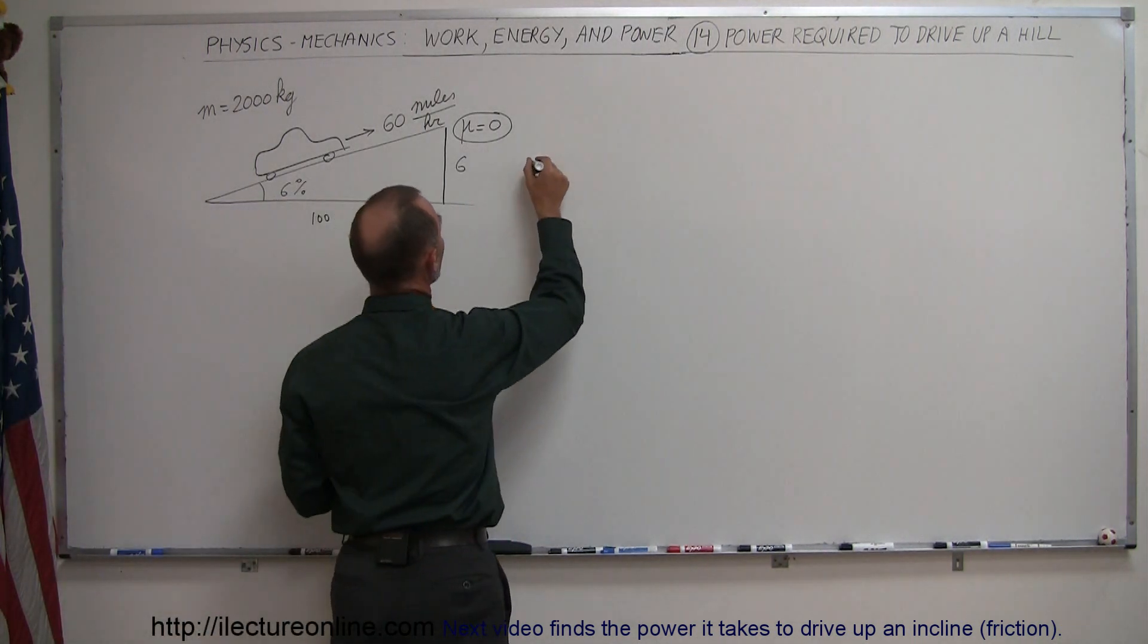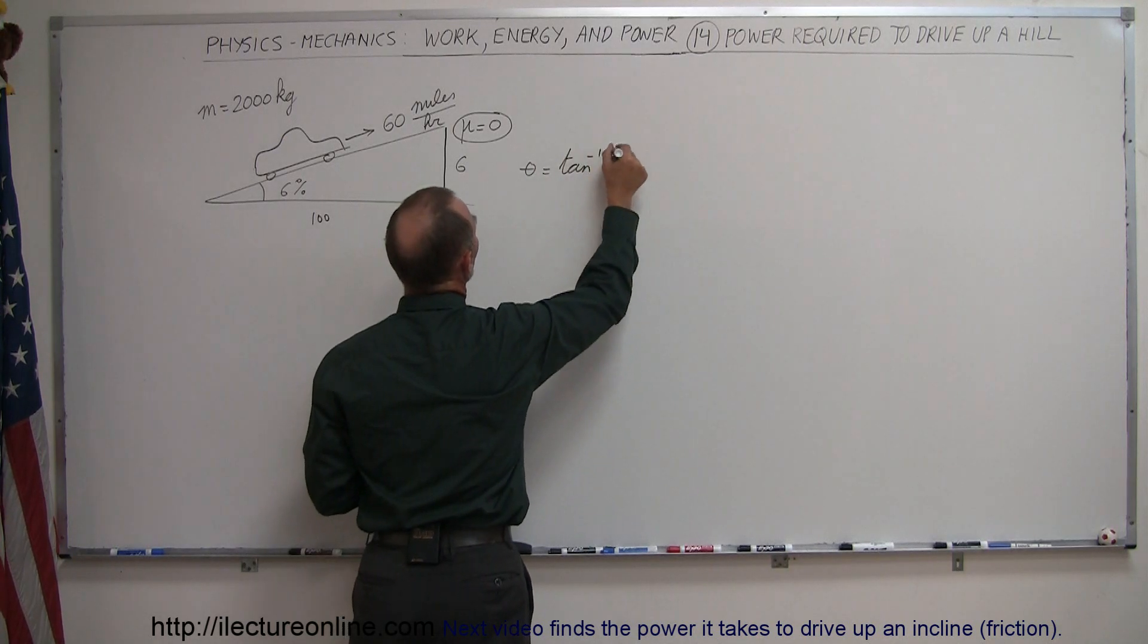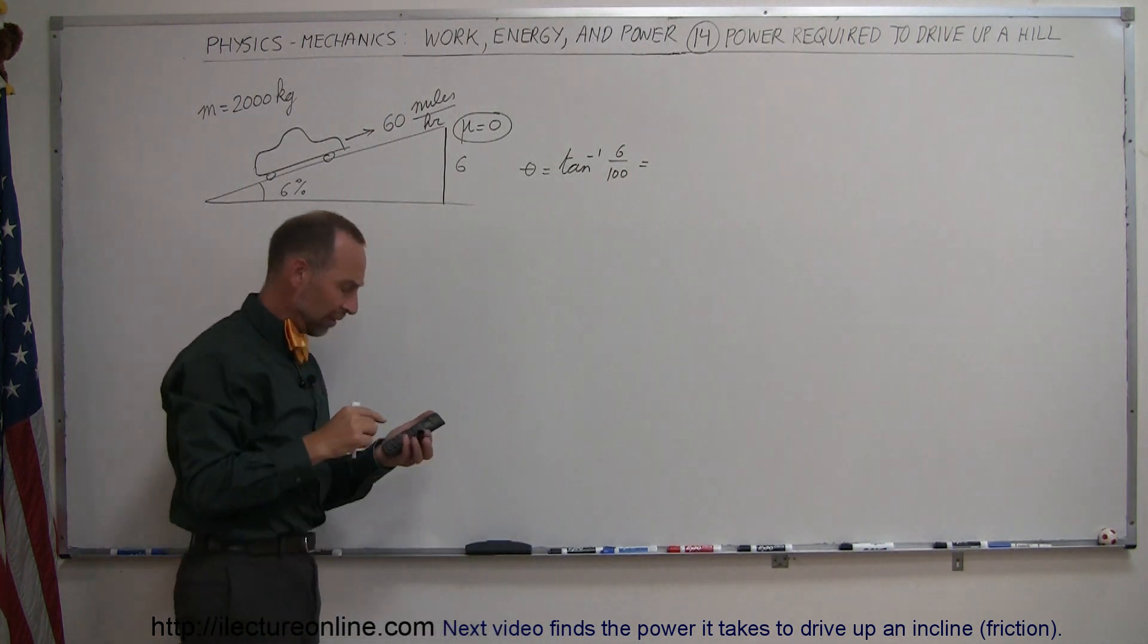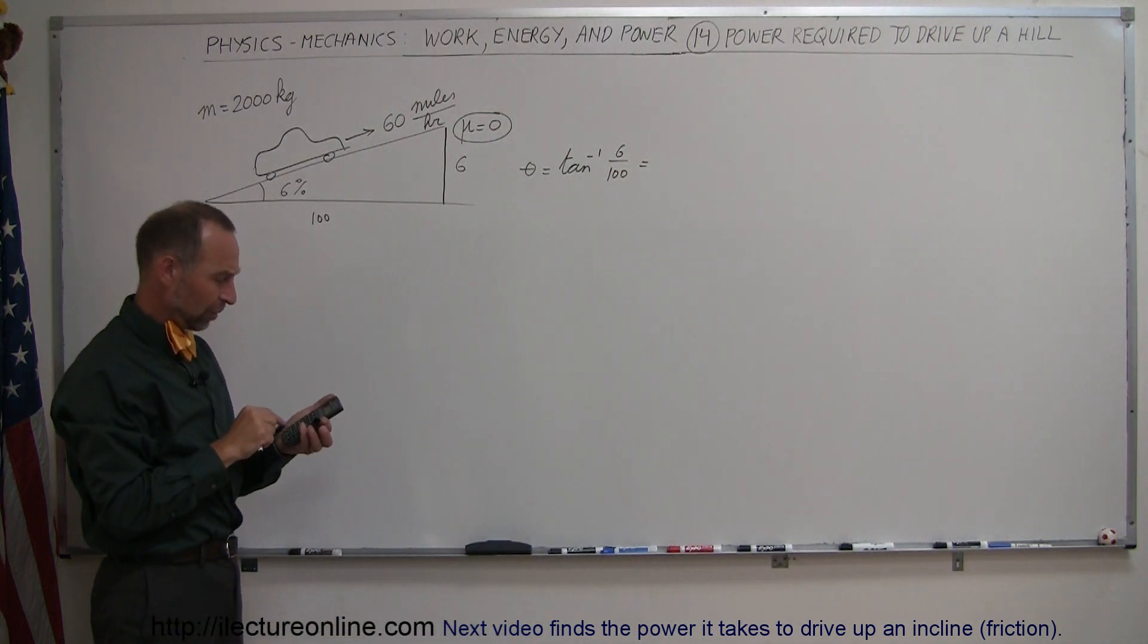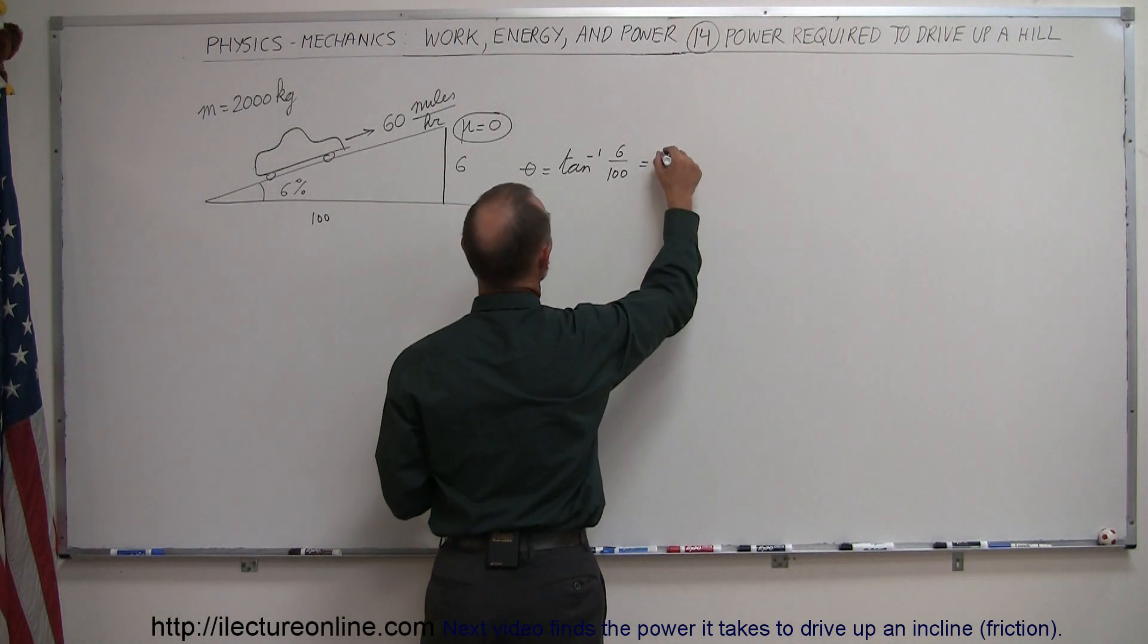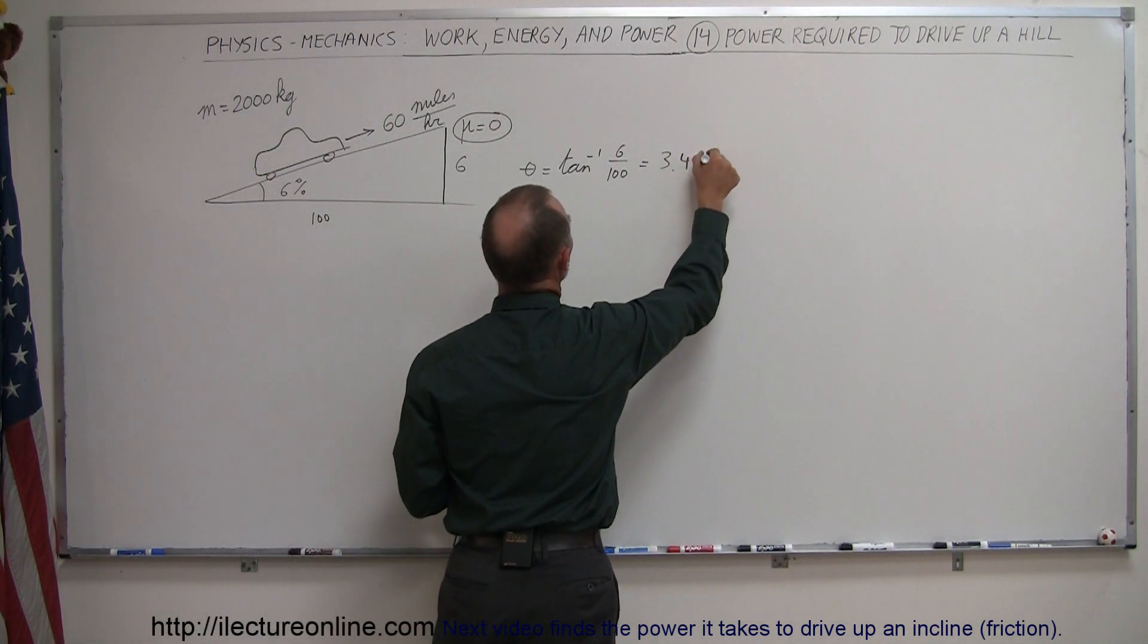For example, theta here would be equal to the arc tangent of the opposite side over the adjacent side. So 0.06, take the arc tangent of that, that's 3.434 degrees.